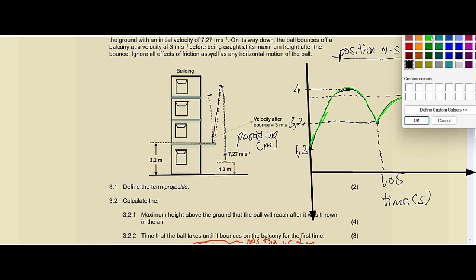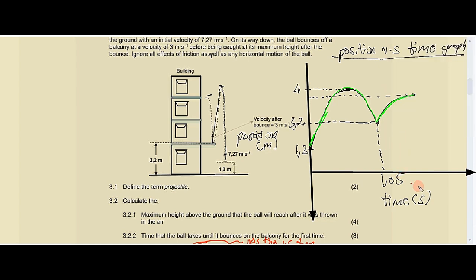The five marks come from: the release height, maximum height, balcony height, time to bounce, and the correct shape — that's one, two, three, four, five. That's how you tackle this question. Please press the thumbs up if you found this helpful, subscribe if you haven't already, and share the link with your friends and classmates so they can also get assistance. We are winning as a team!